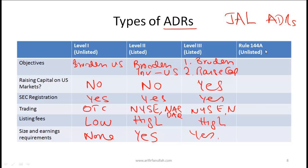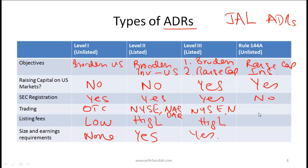With Rule 144A ADRs, a company can raise money by approaching qualified financial institutions in the US and raising capital from those institutions in exchange for a percentage of the company. The objective is to raise capital, but only from qualified institutions. SEC registration is not required, there is no real trading involved, listing fees are very low, and size and earnings requirements do not really exist.